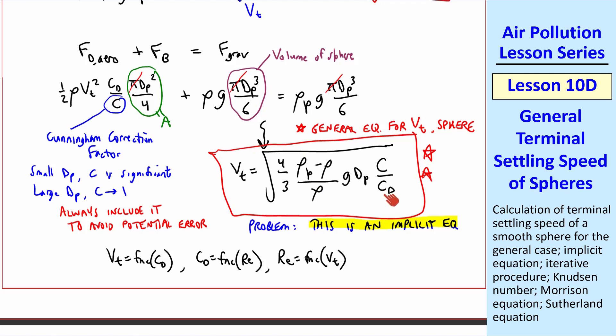So embedded within this Cd is some empirical correlation for Cd as a function of Reynolds number, which contains vt. You can't solve this equation directly for vt unless you plug in some very simple expression for Cd. So in general, this is an implicit equation. To solve, we must iterate.